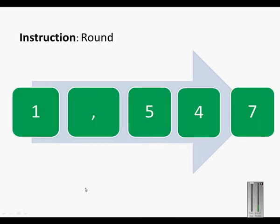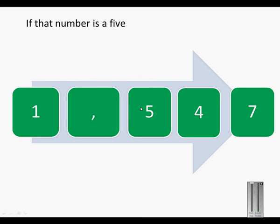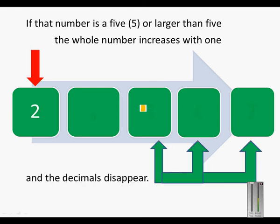The new instruction is round 1.547 to the nearest whole number. You will again look at the first decimal — in this case a five. If that number is a five or larger than five, the whole number will increase with one. So the one will turn into a two and all the other decimals will disappear.